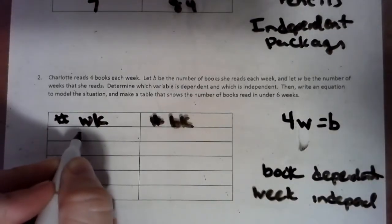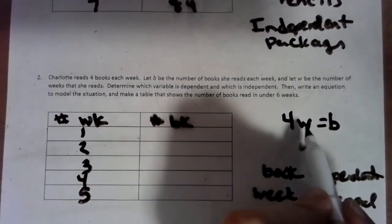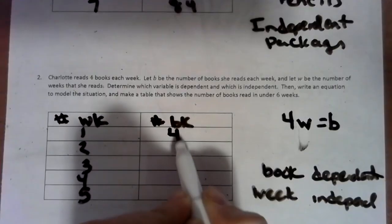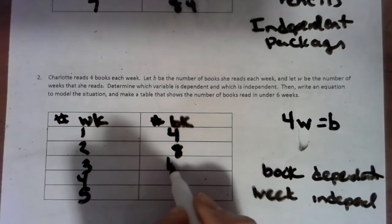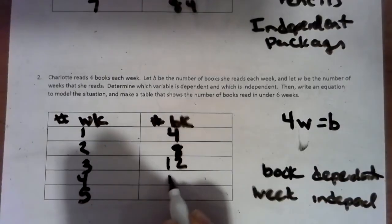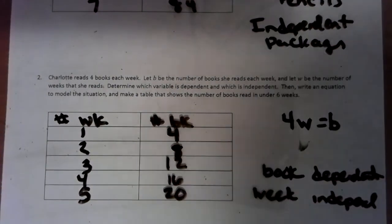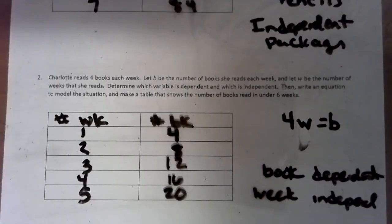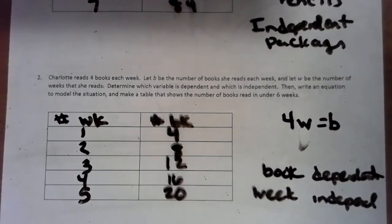Under six weeks: one week, two weeks, three weeks, four weeks, five weeks. One week she reads 4 books. Two weeks, 8 books. Three weeks, 12 books. Four weeks, 16 books. Five weeks, 20 books. Just remember how that's said — the number of books will depend on the number of weeks she reads. The item you say right before the word 'depends' is your dependent event, and the other one will be your independent.